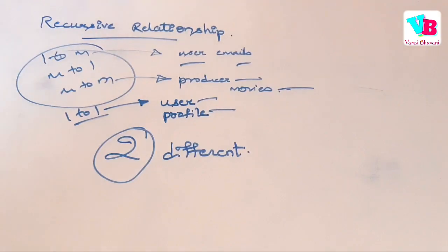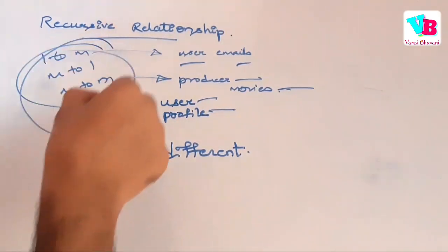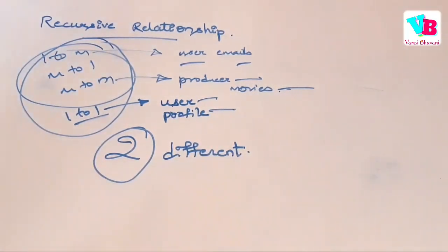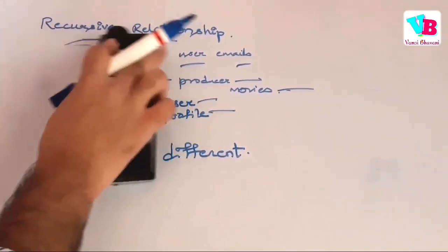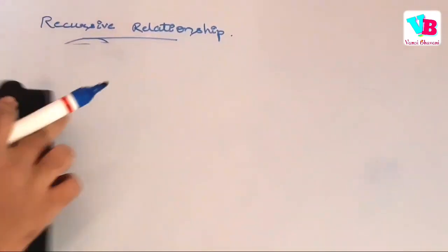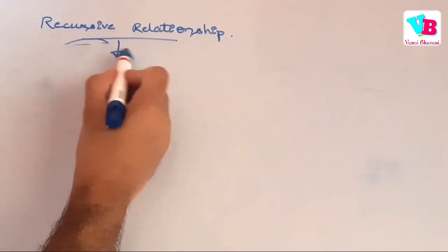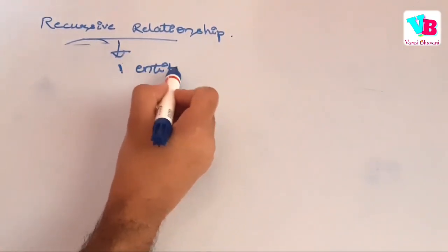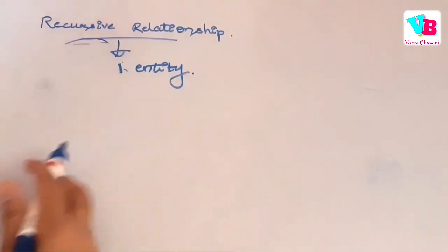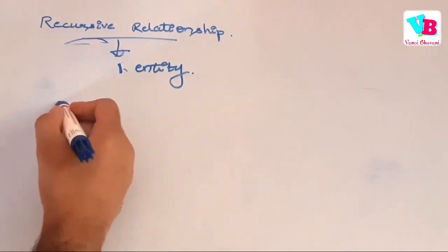Let's move on with the concept. In all these kinds of relationships, there are two different entities participating. But in a recursive relationship, only one entity participates in the relationship. That is all about our recursive relationship. For an example, let's take a set.